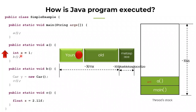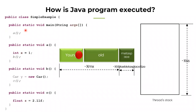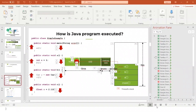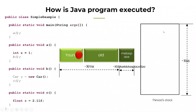The thread has now completed executing method A. When it leaves, method A is also removed from the stack frame. The main method has completed execution, so the thread stack becomes free — there are no more stack frames in the thread stack. Friends, now let me show you a real-world program that will enhance our understanding of this argument.